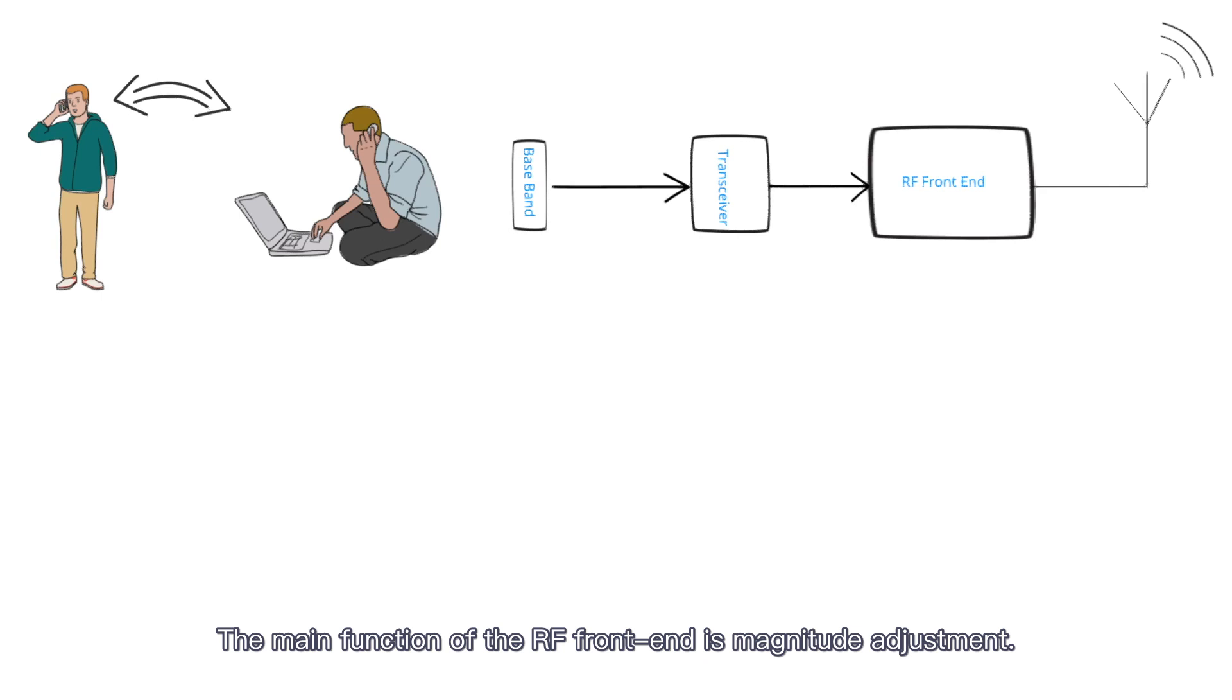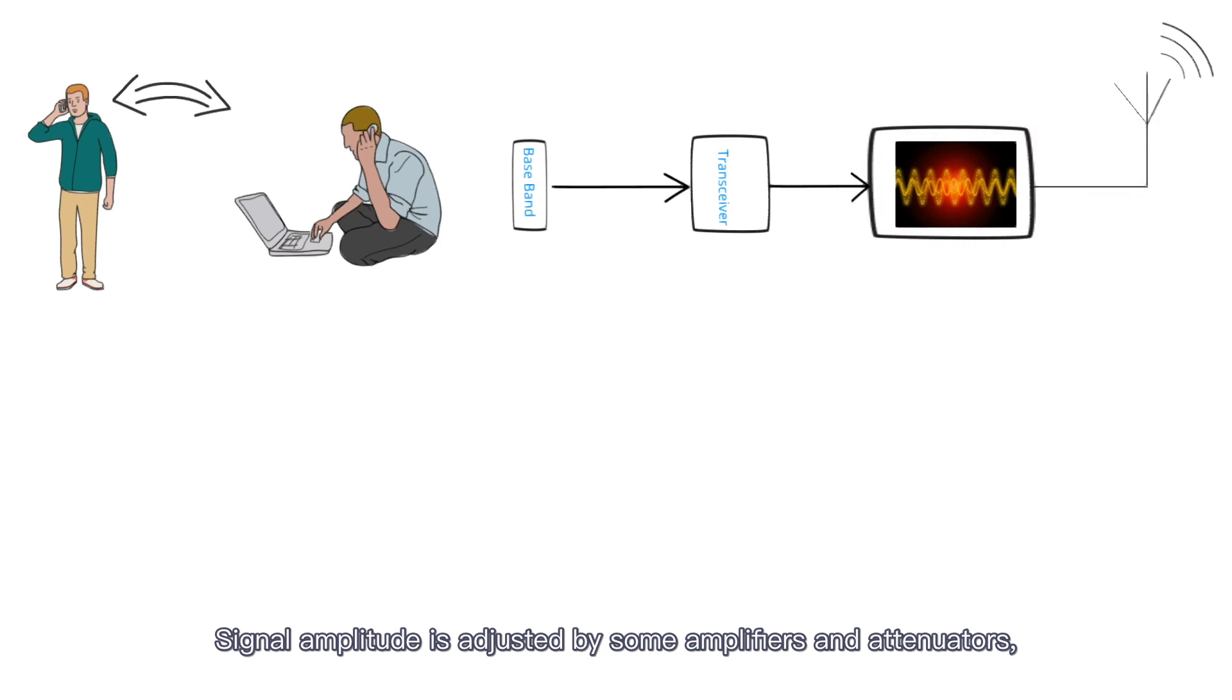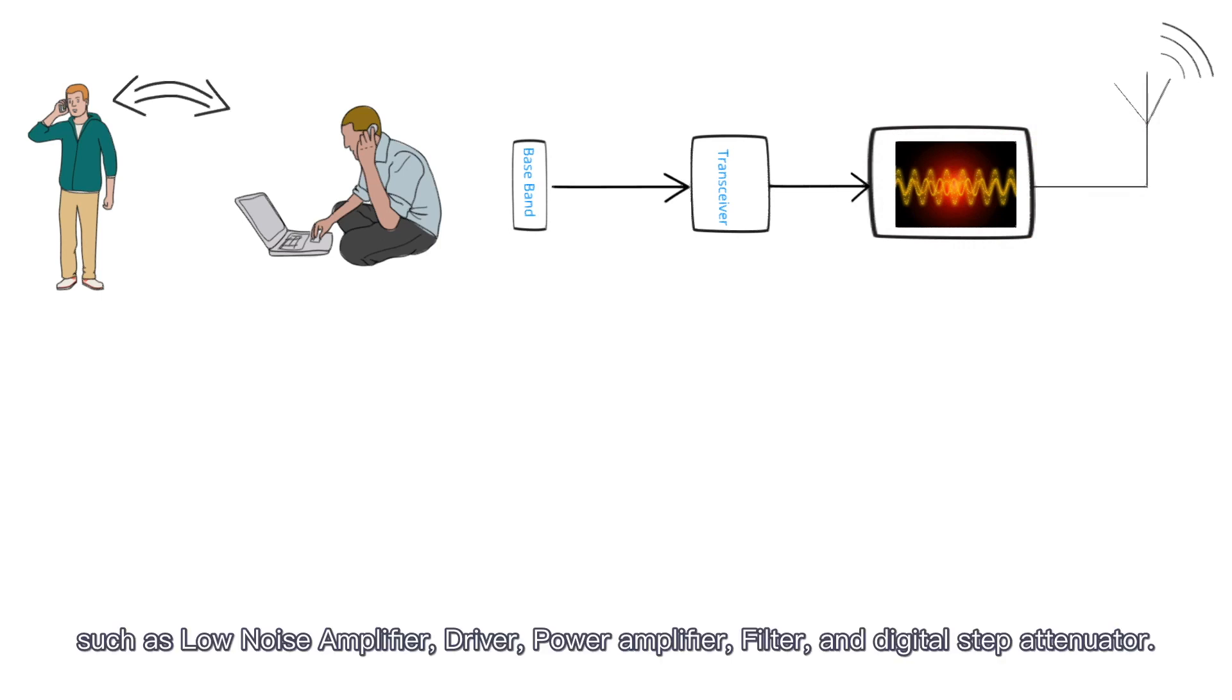The main function of the RF front end is magnitude adjustment. Signal amplitude is adjusted by some amplifiers and attenuators, such as low noise amplifier, driver, power amplifier, filter, and digital step attenuator.